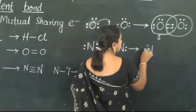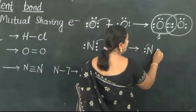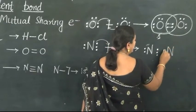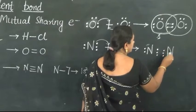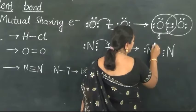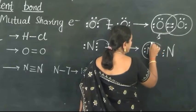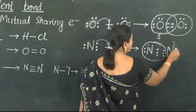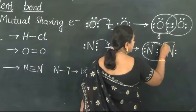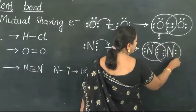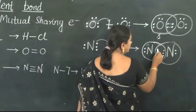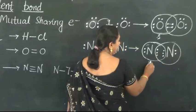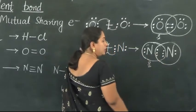The donated electrons are shared among the atoms mutually. Counting the electrons for this Nitrogen atom — 1, 2, 3, 4, 5, 6, 7, 8 — so 8 electrons are present in the outer shell of this Nitrogen atom.